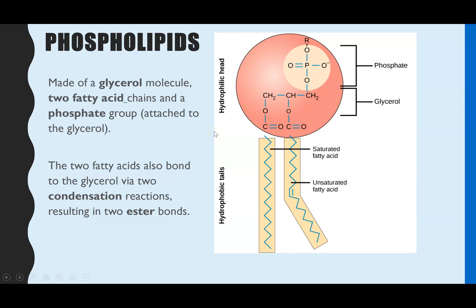Lastly, phospholipids. The structure still has a glycerol molecule and fatty acids, but you only have two. The third fatty acid chain has been replaced by a phosphate group. They're created in the same way — condensation reactions between the glycerol and the fatty acids — but because we only have two chains, there'll only be two ester bonds forming.